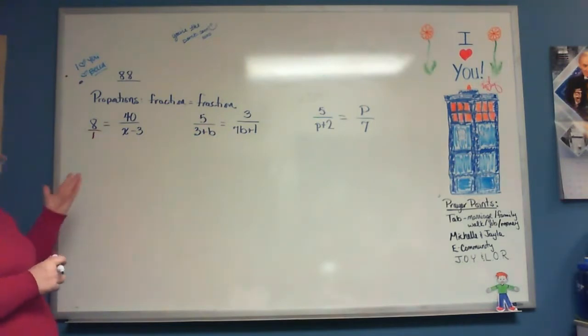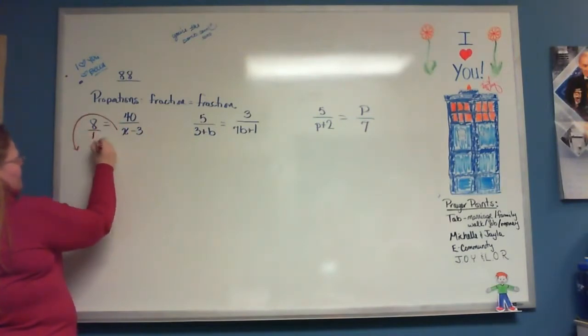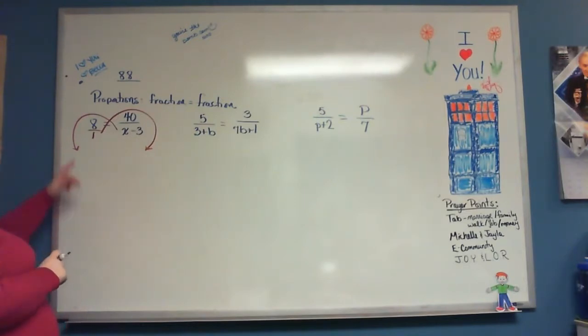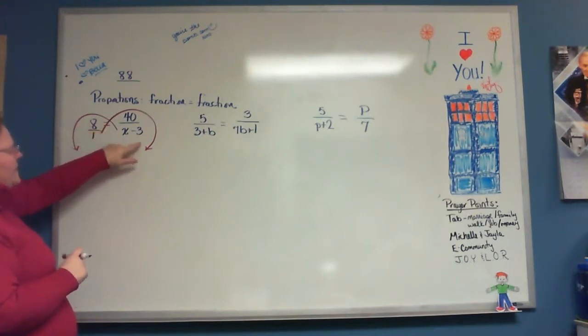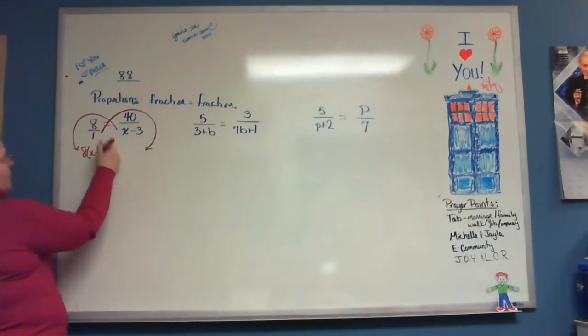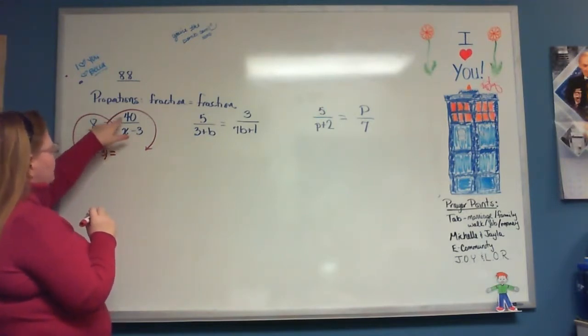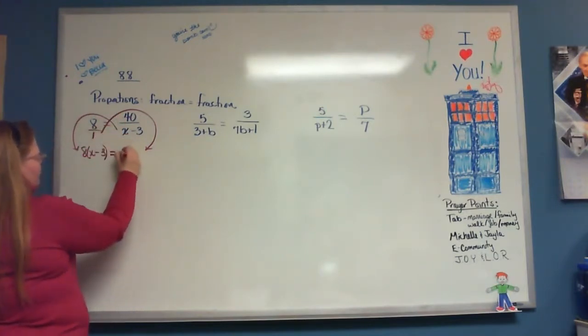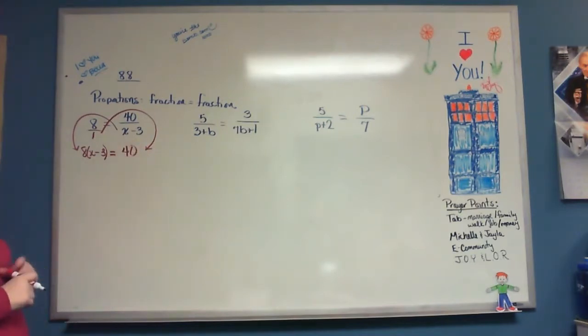That means that you're allowed to cross multiply. So when I go to cross multiply, it's bottom times the opposite top here, and bottom times the opposite top there. So on this side, I'll have my 8 times my x minus 3, and because that's an equal sign there, I get an equal sign here. And then on this side, I have 1 times 40, which is just 40. Now I've got a simple equation, no fractions, ready to solve.